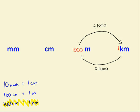So, 2000 metres as kilometres: 2000 divided by 1000 gives us 2 kilometres. And 4 kilometres as metres: 4 times 1000 gives us 4000. So that's that one.